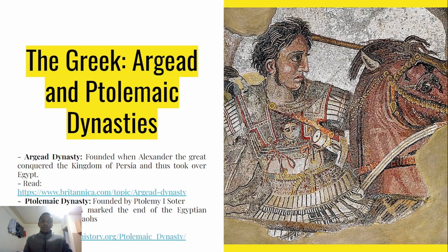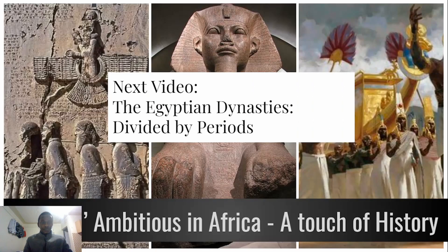In the Greek period, the first Argead dynasty was under Alexander the Great — he has a full name and there's a link where you can learn about him. After he conquered the kingdom of Persia, Egypt came under his control since Egypt was under the Persian kingdom at that time. After his dynasty came the Ptolemaic dynasty, characterized by leaders such as Ptolemy I and Ptolemy II, and later the last queen and pharaoh, who was Cleopatra. There's a full explanation on that — I'll leave it in the description below.